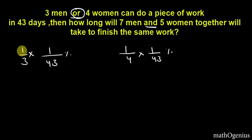That is, all men do 1 by 43 and any one man does 1 by 3 multiply by 1 by 43. So we got the individual works: one man can do 1 by 3 into 1 by 43 of work every day, which will be completed in 43 days.